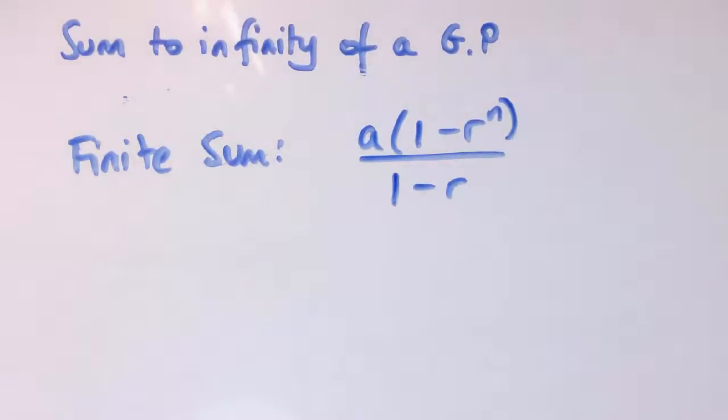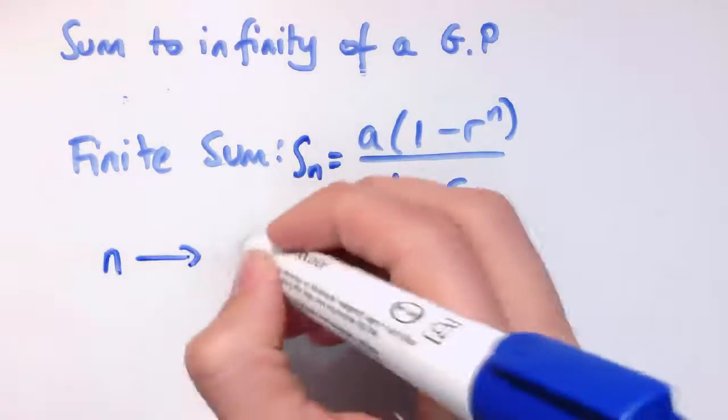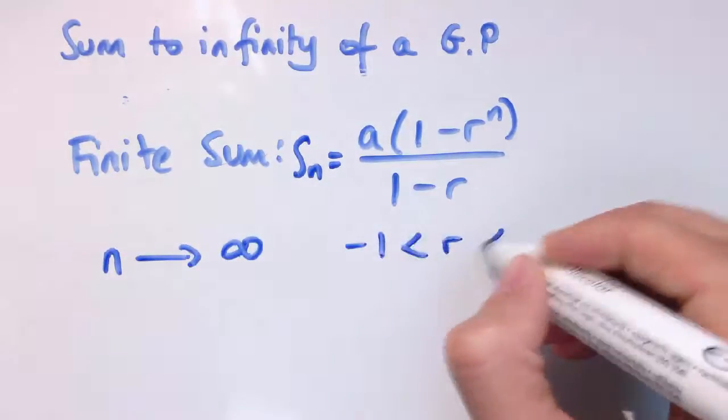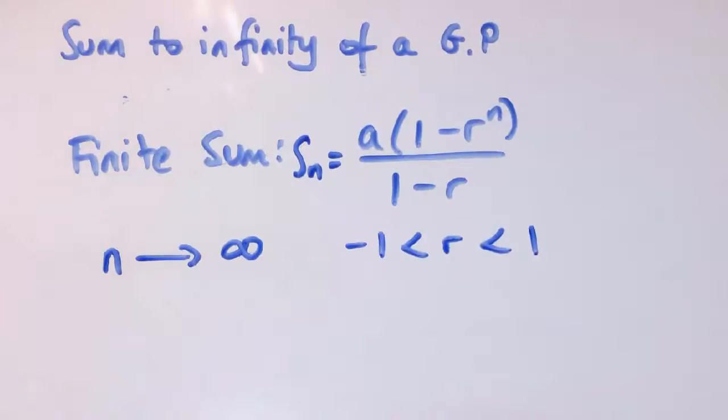So, we'd like to find a formula for the infinite sum. The finite sum was a times 1 minus r to the n divided by 1 minus r. That was the sum of the first n terms, we call it S_n. What happens if I let n tend to infinity? Remember, we're having this condition that minus 1 is less than r is less than 1. Well, if n gets larger and larger, what happens to this sum? Let's think about what this would be here. This is where n appears, and r is a number between minus 1 and 1, so it might be something like 1 third.